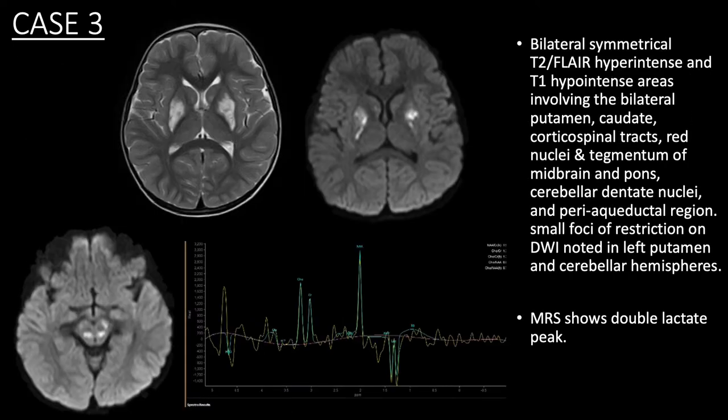In our third case of a 4-year-old male patient, T2 FLAIR hyperintensities are seen in bilateral putamen, caudate, tegmentum and periaqueductal region, which shows diffusion restriction and double lactate peak on MRS.